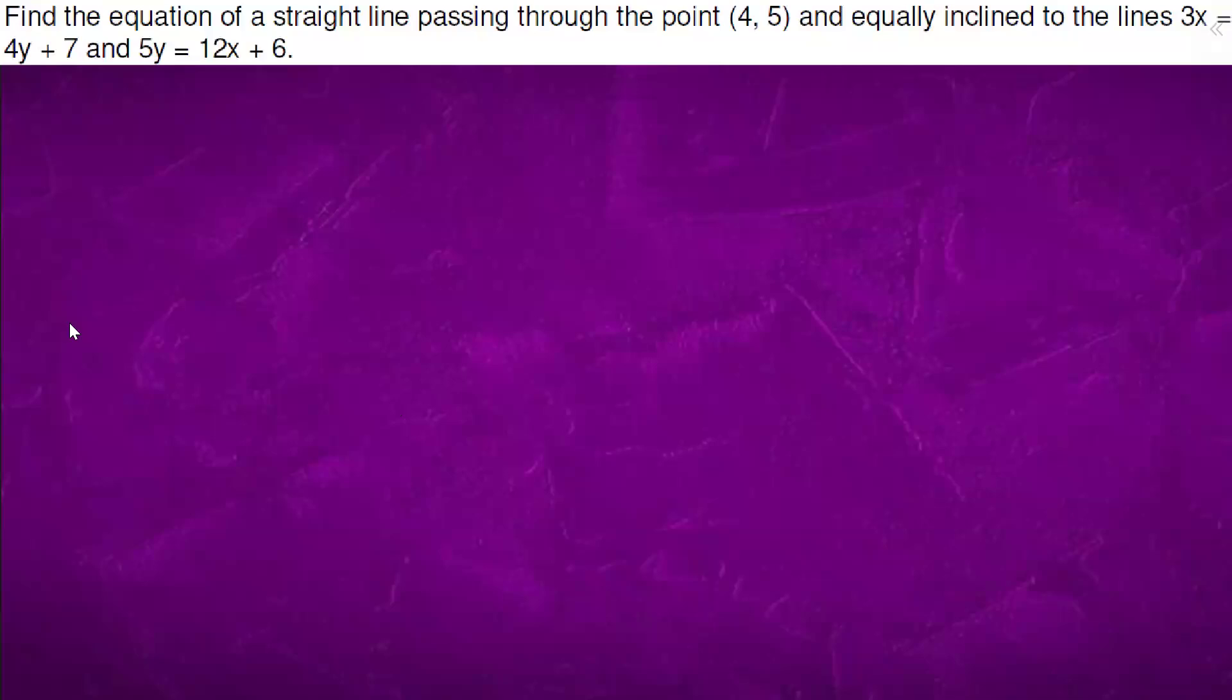In this question, we have two straight lines and there is a line. What will happen? There is a line which is equally inclined. So angle bisector will be a line which will be equally inclined, isn't it?